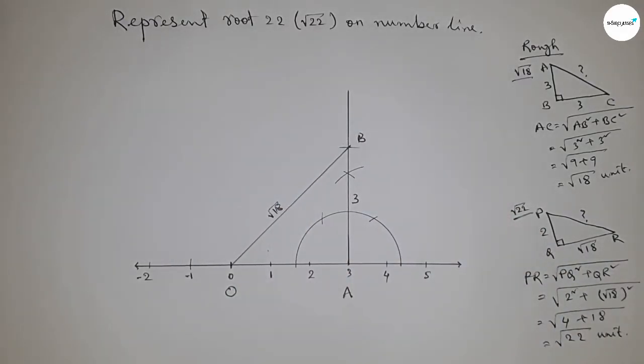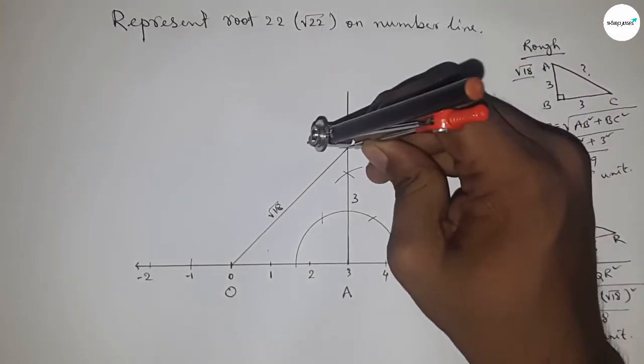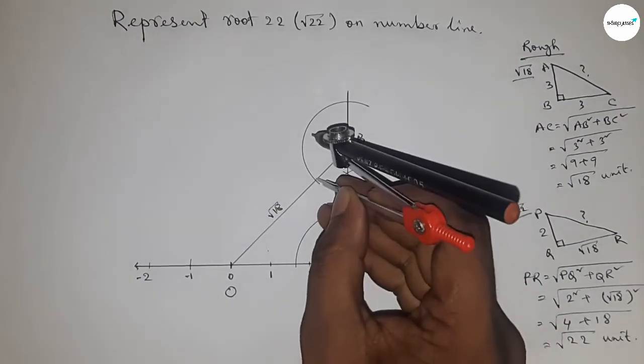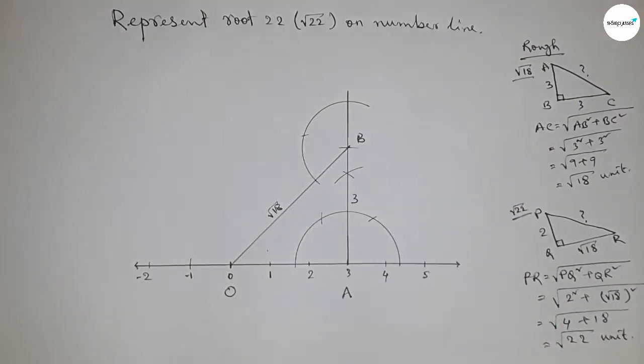So now we have to first draw a 90 degree angle on the point B. So taking any length by compass and drawing a semicircle by this way with same length.